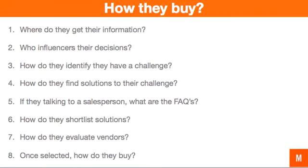The next section, really important, is how they buy. You're going to answer the questions in first person but also supply what type of campaign can be developed to address those answers in third person. So: where do they get their information? Who influences their decisions? How do they identify they have a challenge — maybe something breaks, or their wife says they need to do something, or it's a work requirement. How do they find solutions? Do they look online, go to friends and family, attend expos, or read a book?